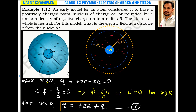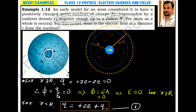Example 1.12. An early model of an atom considered it to have a positively charged point nucleus of charge Ze. As shown in the figure, we have a hypothetical atomic model in which the center consists of charge plus Ze, surrounded by a uniform density of negative charge up to radius R. This negative charge is distributed uniformly, and the atom as a whole is neutral.